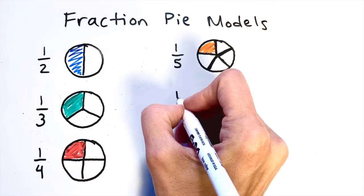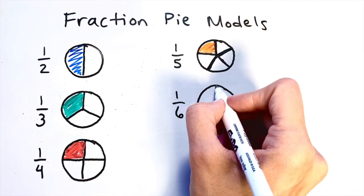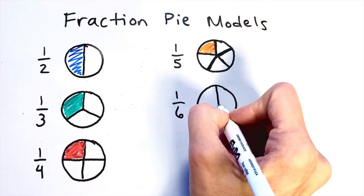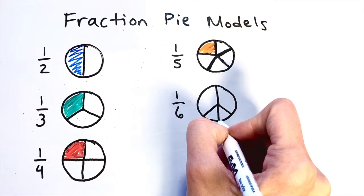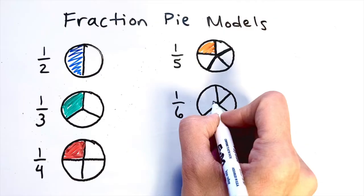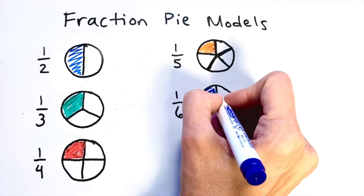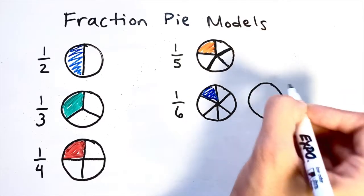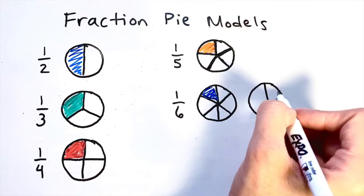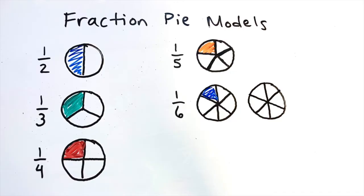Let's take a look at one sixth. Just like with bar models, if you can do thirds you can do sixths. One way is to divide your circle into thirds using that peace-sign shape, and then cut each piece in half to get sixths. Another way is to draw a line down the middle of your circle like halves, and then draw an X on top of that line, trying to keep all the pieces the same size. So you can draw thirds and cut them in half, or you can do a line and then an X.